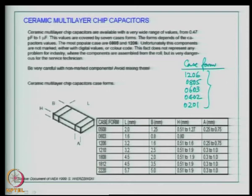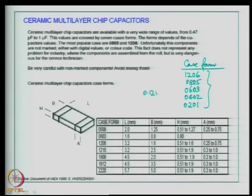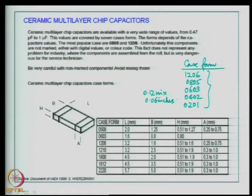When I say 1206, that means the dimensions of the chip component — in this case the capacitor — could be 0.12 inches by 0.06 inches, and so on for the other case forms. I hope you are very clear about the case form notations. This is similar to what we have seen with resistors.